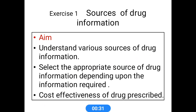We know these drugs are available in different forms and they have different sources. We can obtain information from different reference textbooks like pharmacopoeia, Kerala State Drug Formulary, and Goodman & Gilman. These reference textbooks give the sources of drug information. Another aim is to select the appropriate source of drug information depending upon the information required, and this is also helpful for the cost-effectiveness of drugs prescribed.